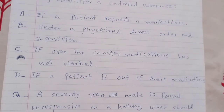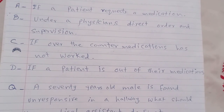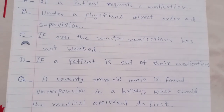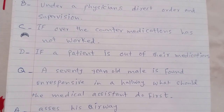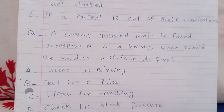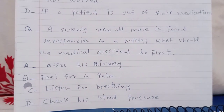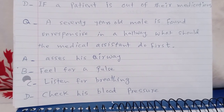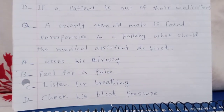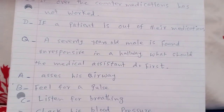If a patient, a 70-year-old male, is found unresponsive in a hallway, what should the medical assistant do first? A. Assess his airway. B. Feel for a pulse. C. Listen for breathing. D. Check his blood pressure. The answer is B: feel for a pulse.